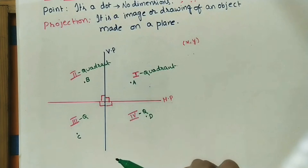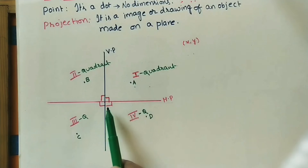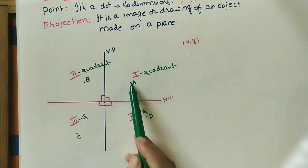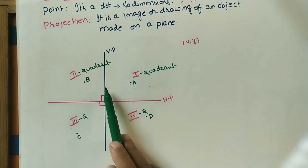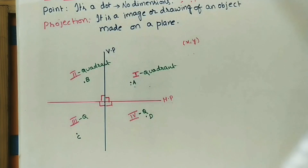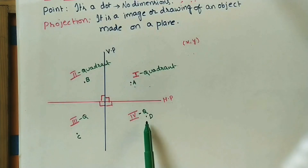Initially I am taking point A. Point A is above the horizontal plane and in front of the vertical plane. Point B is above HP and behind VP. Point C is below HP and behind VP. Point D is below HP and in front of VP.